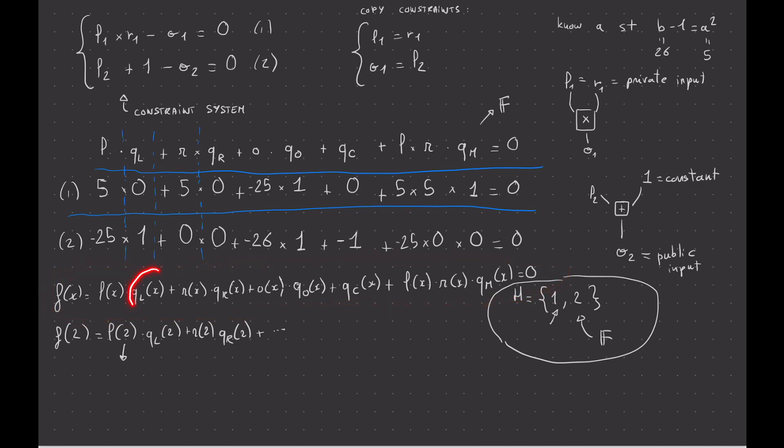f is equal to this polynomial here. And maybe since the verifier knows ql, qr, qo, qc, and qm, which describe the whole circuit or all the constraints in our circuit, then the prover really doesn't need to send these functions and can instead send l, r, o, and that's it.